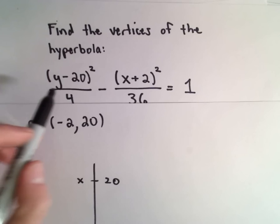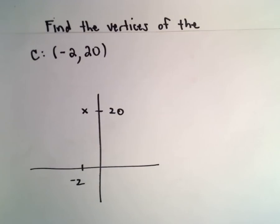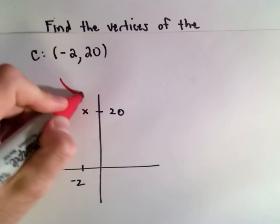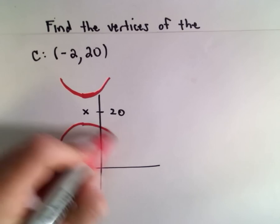Since it's of the form y squared minus x squared equals 1, I know it's going to open upwards. I know my hyperbola is going to open upwards and downwards.